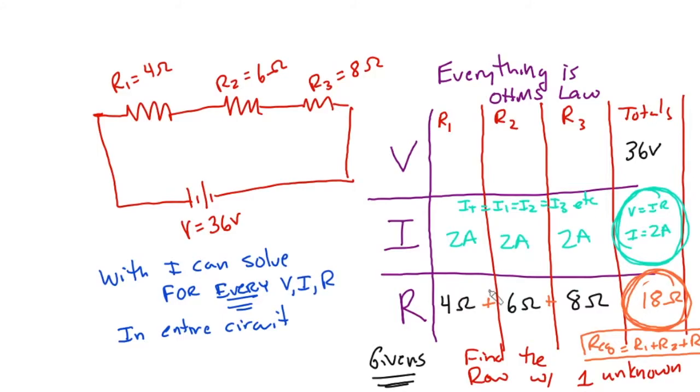And then the glorious thing happens. Last, but certainly not least, once I get to I, now I could say V equals I times R, 8 volts, V equals IR, 12 volts, and V equals IR, 16 volts. And then we can check, because this plus this has to equal this, because of our rule, V total equals V1 plus V2 plus V3.